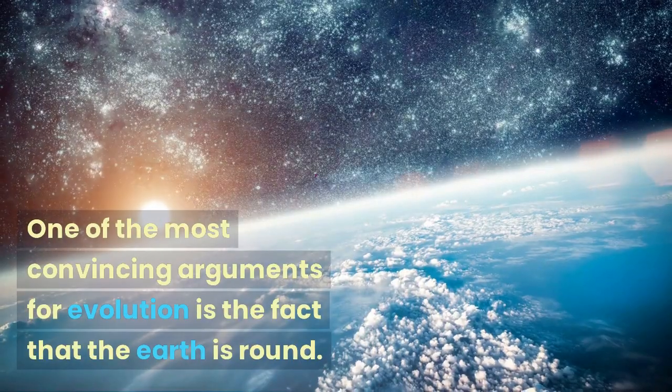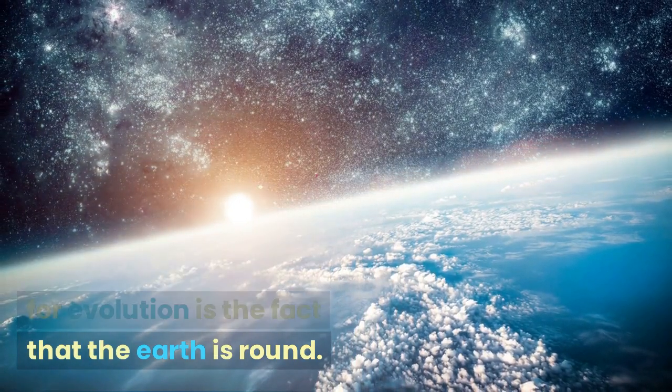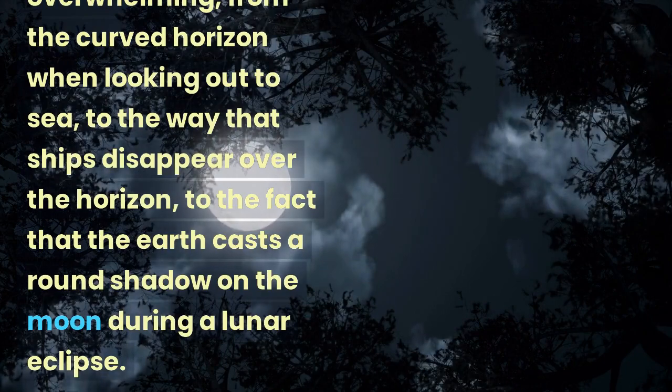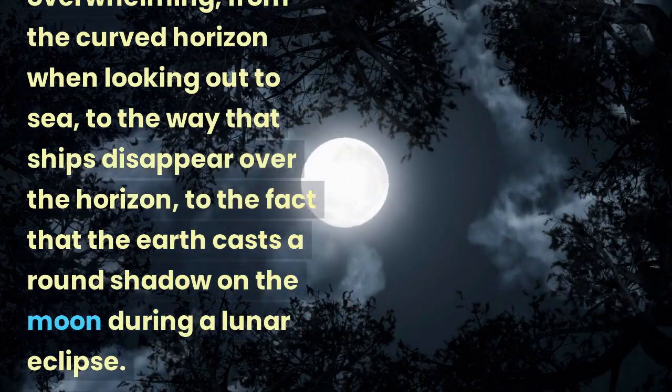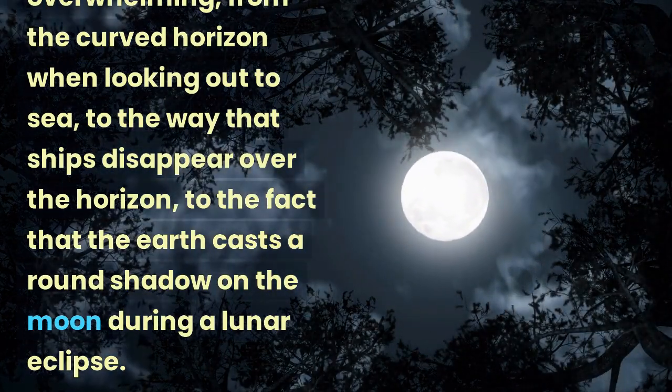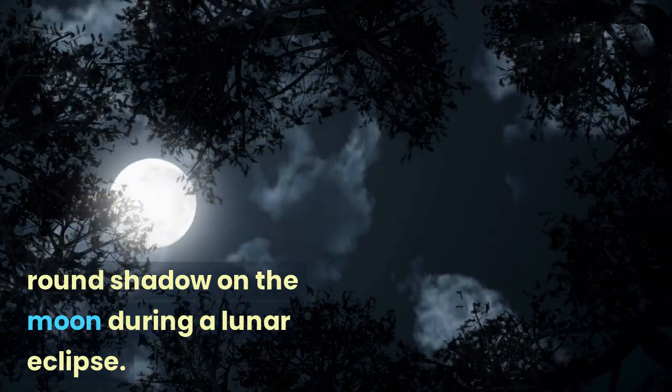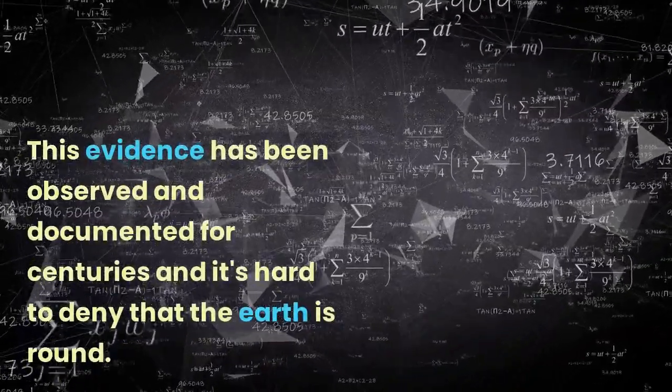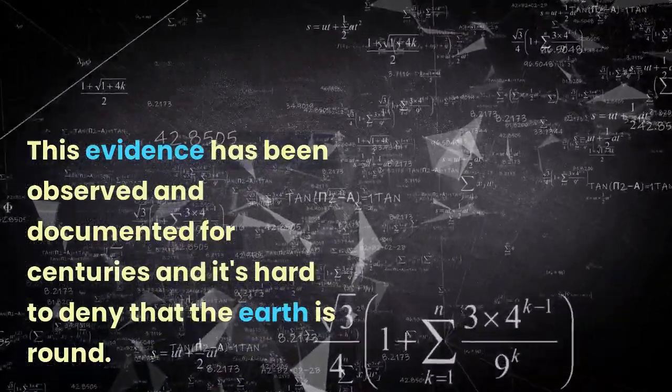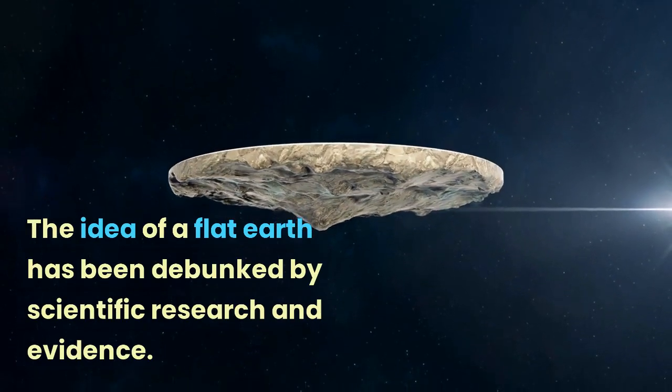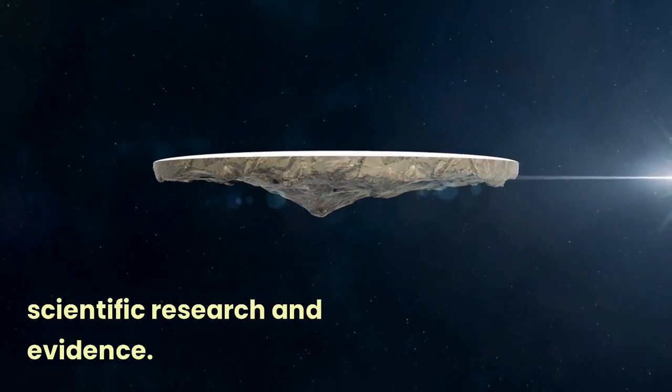One of the most convincing arguments for evolution is the fact that the Earth is round. The evidence that the Earth is round is overwhelming, from the curved horizon when looking out to sea, to the way that ships disappear over the horizon, to the fact that the Earth casts a round shadow on the moon during a lunar eclipse. This evidence has been observed and documented for centuries. The idea of a flat Earth has been debunked by scientific research and evidence.